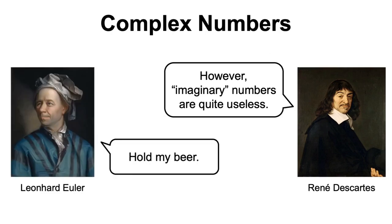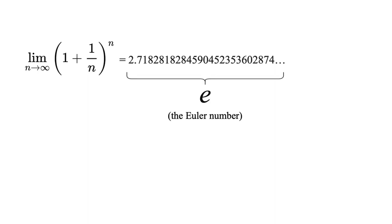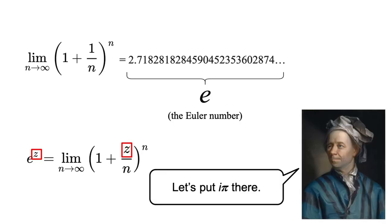However, René Descartes regarded complex numbers as fictitious or useless, and it was not until Euler that they became more popular. What Euler was interested in was to find the limit as n approaches infinity of the following equation. After some calculations, he found out that this was equal to 2.718281... or the number e, which was named after him. Interestingly, if we switch the numerator of the second term to some constant, the limit of this equation becomes e to the power of that number.